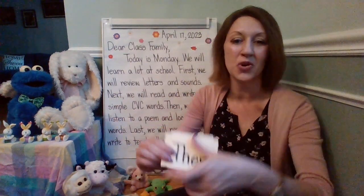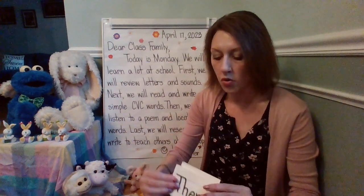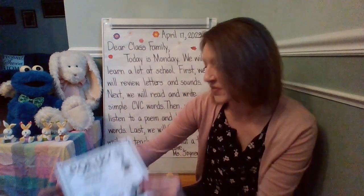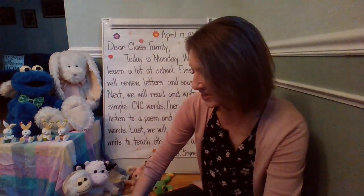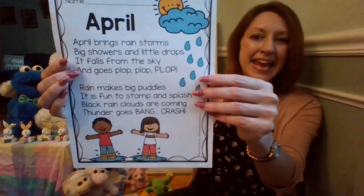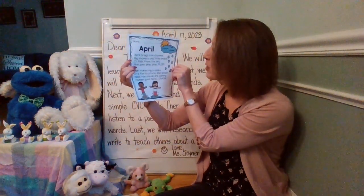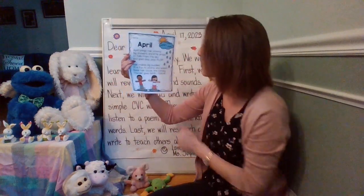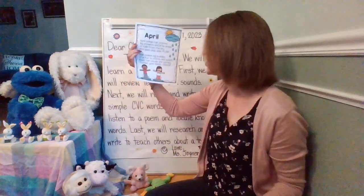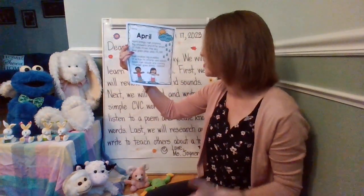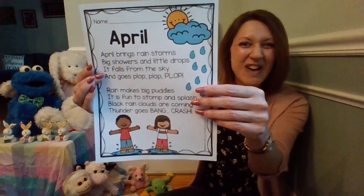Let's look at this transitional word: then. Then we will listen to a poem and locate known words. We remember poetry can have a simile, rhythm, repetition, or alliteration. We're going to revisit the April poem and find words that we know. April brings rainstorms, big showers and little drops. It falls from the sky and goes plop, plop, plop. Rain makes big puddles — it is fun to stomp and splash. Black rain clouds are coming. Thunder goes bang, crash. We're going to reread this poem and find words that we know and can read.